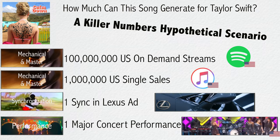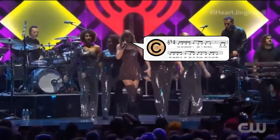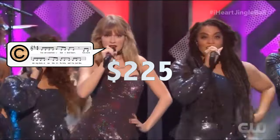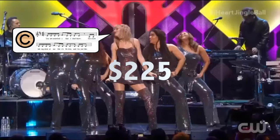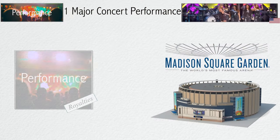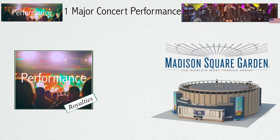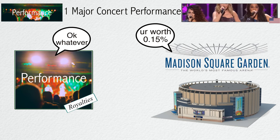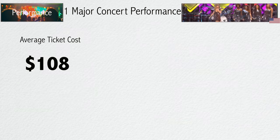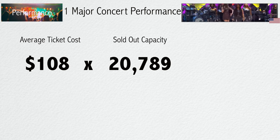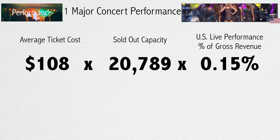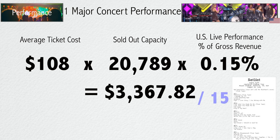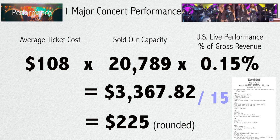The sold-out Madison Square Garden performance of the song during her 15-song show will generate about $225 of publishing performance income. Live performance royalties are paid by the venue based on a percentage of gross revenue — in the US, about 0.15% of the gross. Assuming an average ticket cost of $108 multiplied by the venue's capacity and this percentage, we get about $3,300, which divided between the 15 songs performed is about $225 per song.